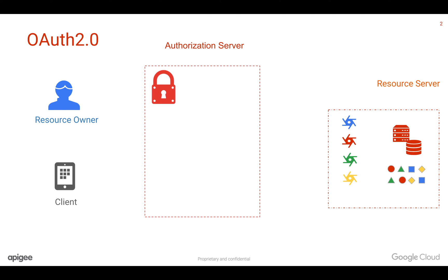Let's take an example to explain OAuth 2.0. Let's say the resource server is an XYZ bank, which has features like fund transfers, credit and debit transactions, as well as account information. And let's say the resource owner is you, who has a bank account with XYZ bank and performs various transactions.